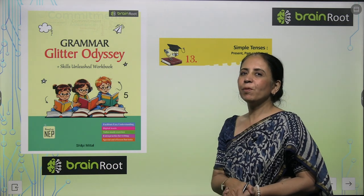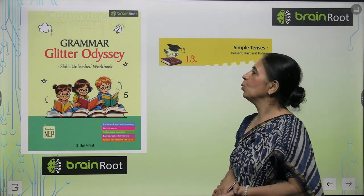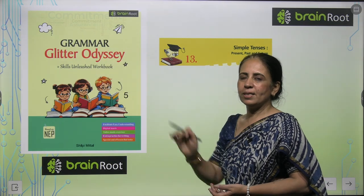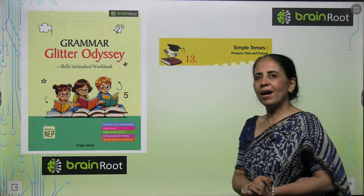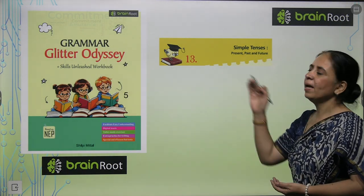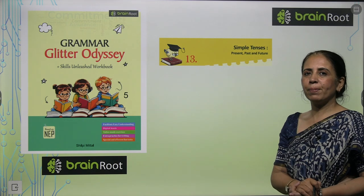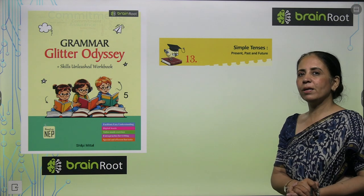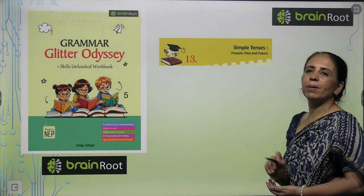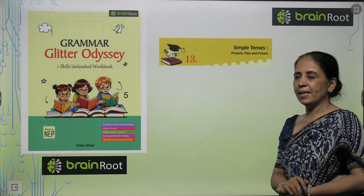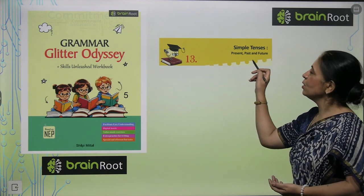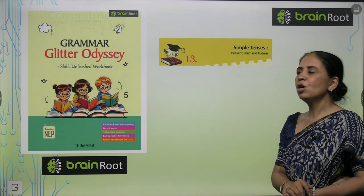Hello my lovely children, welcome to Brain Roots Grammar. Glitter Odyssey grade 5, and today we are going to start a new chapter — chapter number 13. The name of the chapter is Simple Sentences, that is present, past and future.